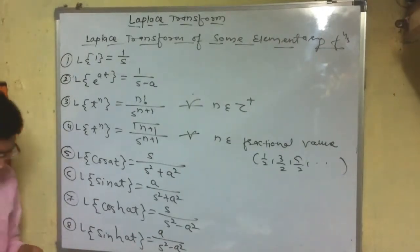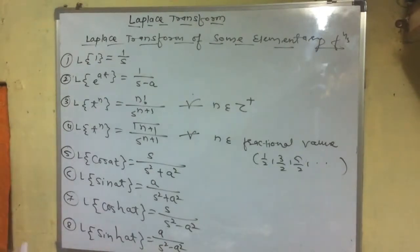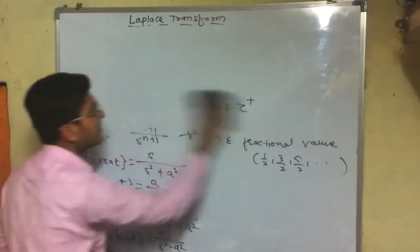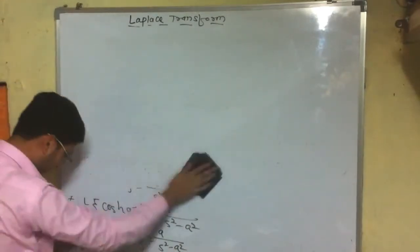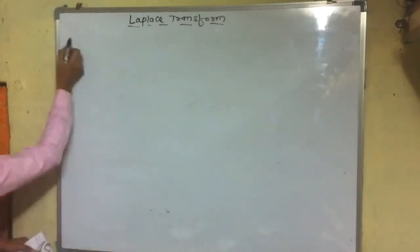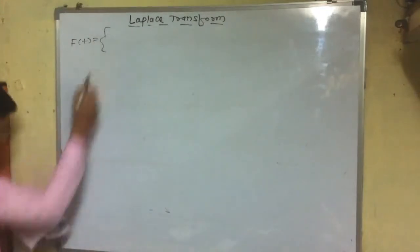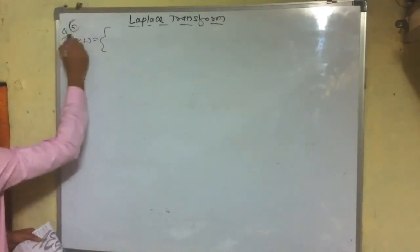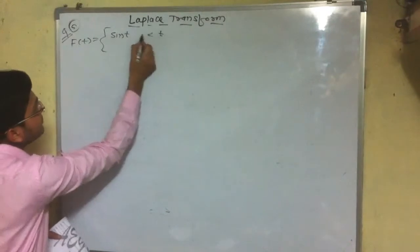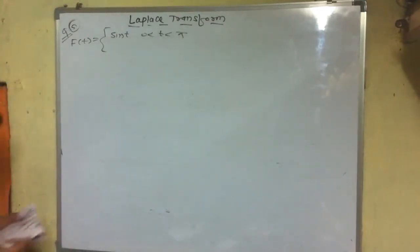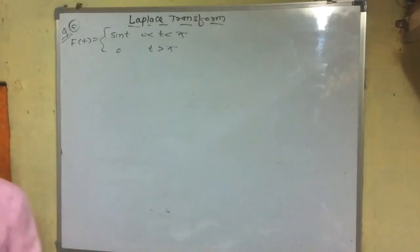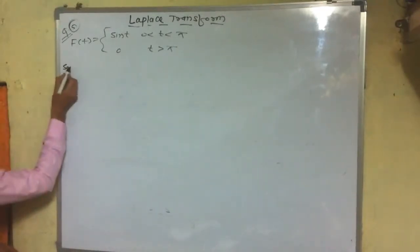Let's consider problem number five. In this problem, a discontinuous function is given. The function f(t) is defined as sin(t) when t varies from 0 to π, and it is 0 for all t greater than π. This is the function whose Laplace transform we want.